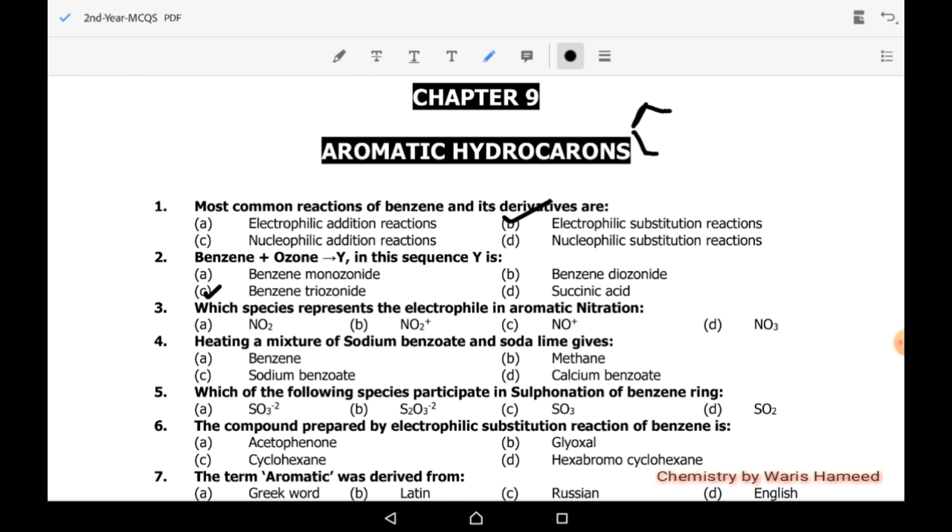When benzene reacts with three ozone molecules, it forms C6H6O9, benzene triozonide. The electrophile in aromatic nitration is NO2 positive, which is the electrophile for nitration of benzene.